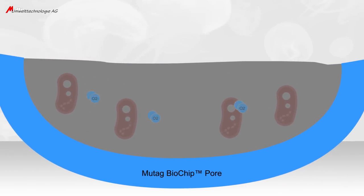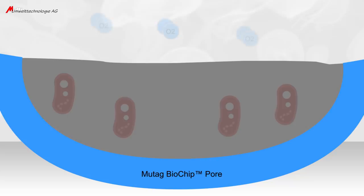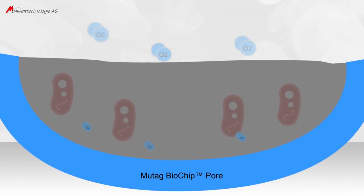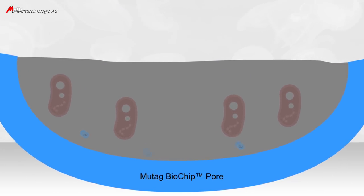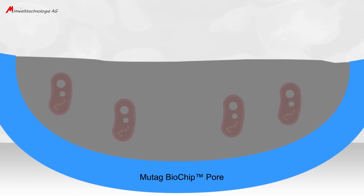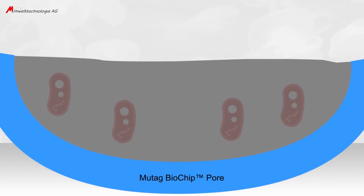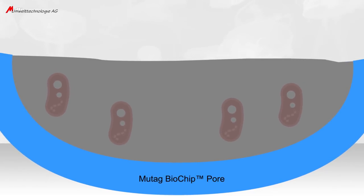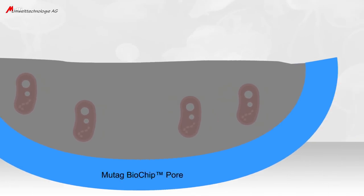Biomass established in pores with a pore depth of approximately 0.5 mm can permanently be supplied in a sufficient manner and hence does not die off.